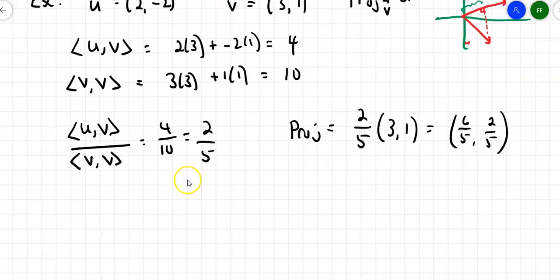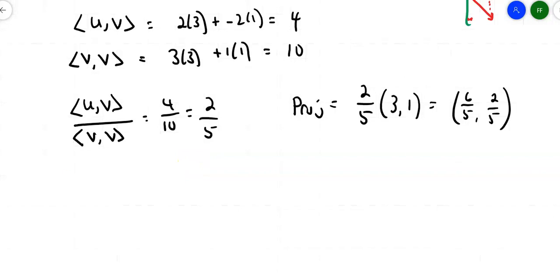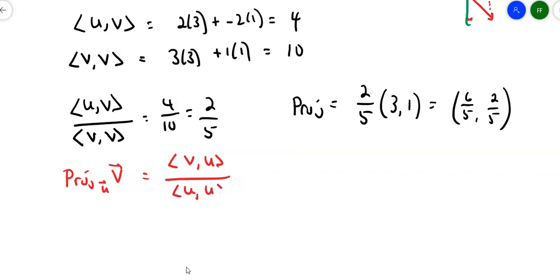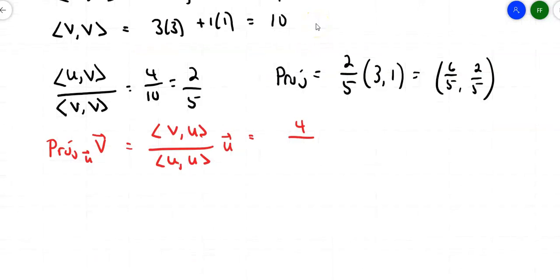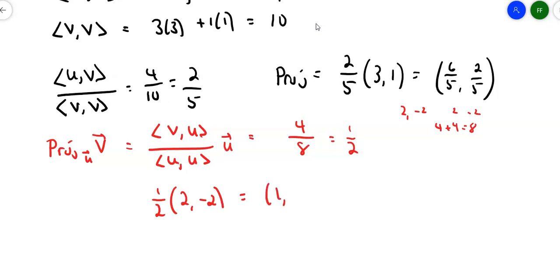Can I do the projection of v onto u? Let's try it with the same set of vectors. The projection of v onto u is the inner product of v and u over the inner product of u and u, times vector u. The numerator is still 4, since the inner product of u and v equals the inner product of v and u. The inner product of u and u: u is (2, -2), so 2 times 2 is 4, negative 2 times negative 2 is 4, giving 8. So the scalar is 4/8, which is 1/2. I want 1/2 of vector u, which is (2, -2), so that projection is (1, -1).